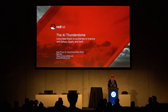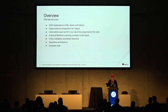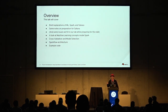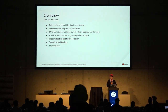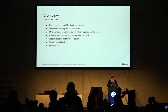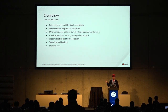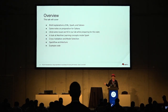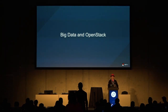We're going to cover a brief explanation, a recap of some of the essential technologies in ML, Spark, and Sahara. Some notes on preparing for it and some of the fun issues we hit in our lab when testing this out. I couldn't get the demo fully working so I had to drop that, but I can tell you about it at the end. Then we'll look at machine learning on Spark, cross validation and model selection, a framework called SparkFlow, and some example code. So, without further ado, big data on OpenStack.